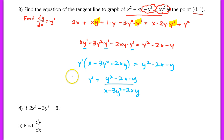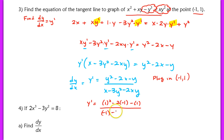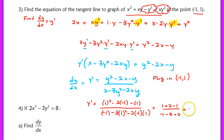To find the equation of the tangent line, we need the slope by evaluating our derivative at the point negative 1, 1. Typically we only plug in an x value, but now the derivative is in terms of both x and y, so we plug in both. We have y prime equals 1 squared minus 2 times negative 1 minus 1, all over negative 1 minus 3 times 1 squared minus 2 times negative 1 times positive 1. This simplifies to 1 plus 2 minus 1 over negative 1 minus 3 plus 2, which is 2 over negative 2 — giving a slope of negative 1.